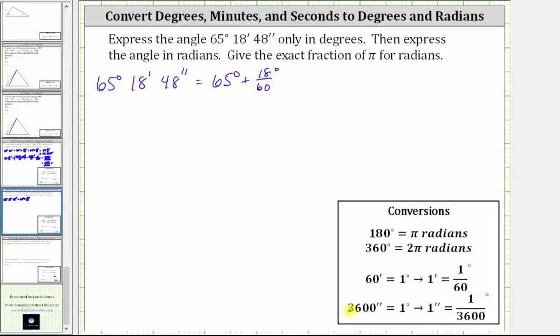Similarly, 3600 seconds is equal to one degree, and therefore one second is equal to one 3600th of a degree. And because we have 48 seconds, we can write 48 seconds as 48/3600ths of a degree, which gives us plus 48/3600ths of a degree.